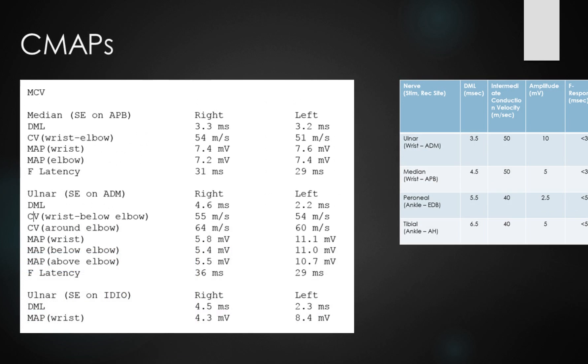We'll now have a look at the motor responses. The median responses are all very normal. We've got normal distal motor latencies on both sides. We've got normal conduction velocities in the forearm segment, about 50 metres per second on both sides. The motor amplitudes are normal and symmetrical. But interestingly, we can see that the F latency is just a little bit prolonged on the right-hand side, but nothing dramatically prolonged compared to the left. Is that of relevance? I don't know at this point.